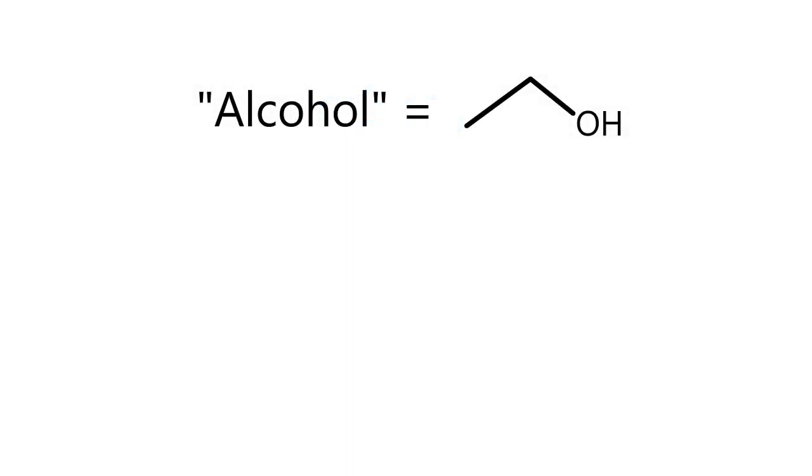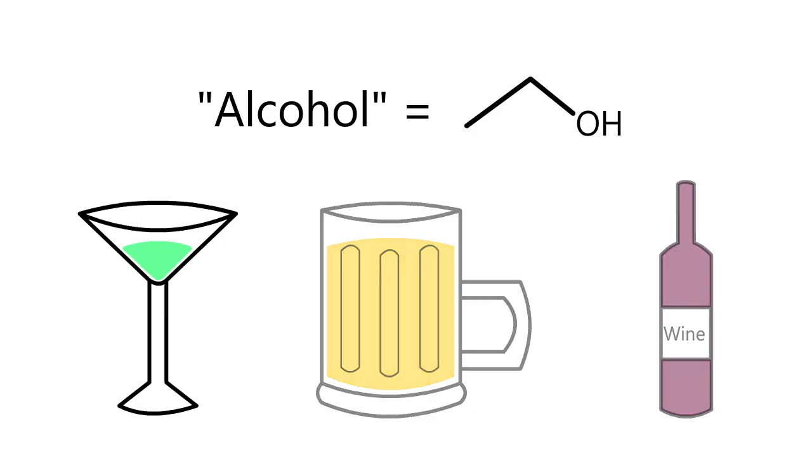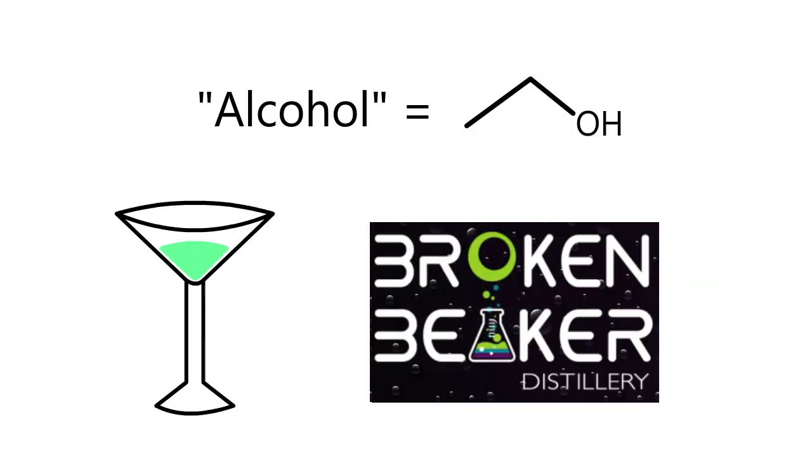Ethanol, or what we typically call alcohol, is produced in drinks by fermentation. However, there are slight differences in the way different alcoholic beverages are made. Thanks to the generosity of the Broken Beaker Distillery in Indianapolis, this video will explore the chemistry behind distilled beverages.